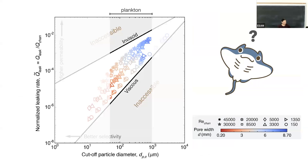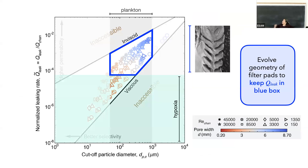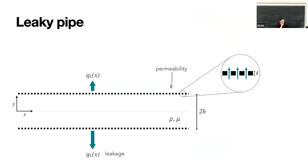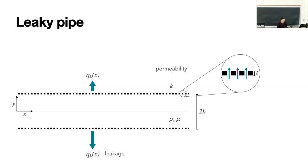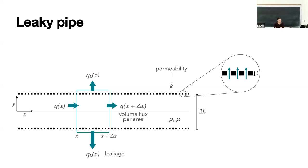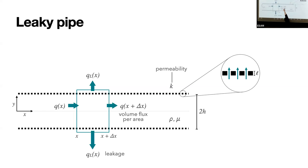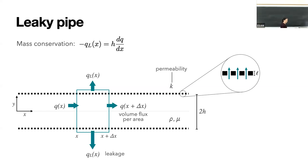So here's my manta: this is the question - how do I design those platelets in order for Q_leak to be in that blue box? Let me go back to the leaky pipe. I'm going to zoom in on a little chunk and introduce a new parameter L - the thickness of my little chunk. I'll draw a control volume: some flux Q coming in, Q at x plus delta-x coming out the other way, and Q_leak coming out the sides. Conserving mass gives: Q minus Q_leak equals H times dQ/dx.